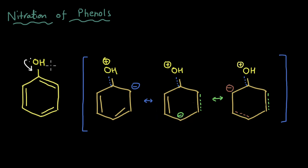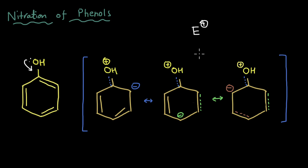Apart from the OH group activating the ring, the electron density is much higher at the ortho and the para positions — this already gives us clues about the products of the nitration reaction. Because the electron density is higher at these positions, when phenol undergoes an electrophilic aromatic substitution reaction with an electrophile E+, it will get added to these positions. We won't get a meta product, because the electron density is not higher there. Since it is the OH group that directs electron density to ortho and para, it is called an ortho-para directing group.